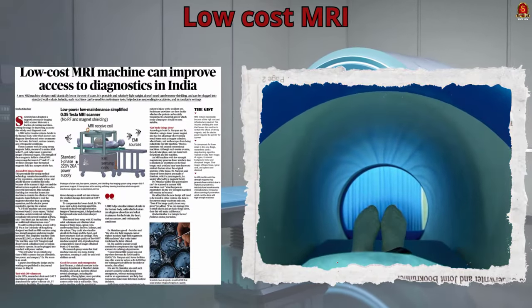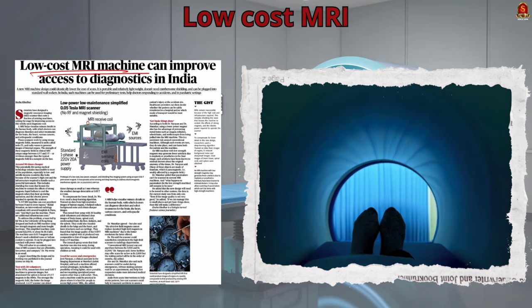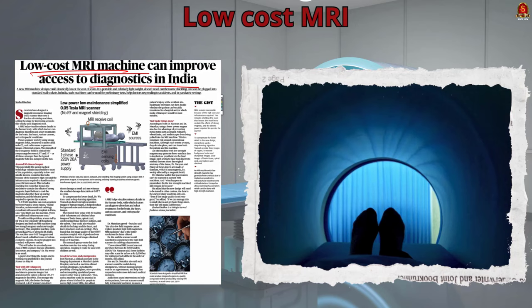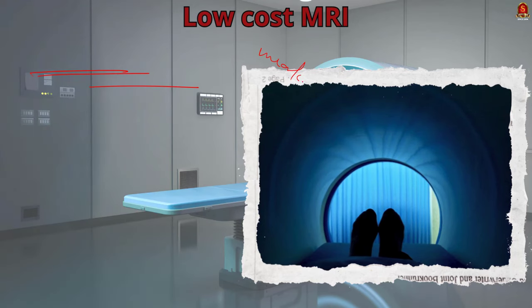Scientists have created a low-cost, portable MRI machine that can help improve medical diagnostics in India. This new machine uses a V-shaped magnet and is much cheaper than traditional MRI machines. It can be plugged into a regular wall socket and does not need expensive infrastructure. With the help of special software, it produces clear images despite low magnetic strength. It has been tested on 30 volunteers and has successfully imaged various body parts. This affordable MRI machine can be used for quick tests, emergencies, and children's care, making medical scans more accessible in India. Thus, MRI is a potential prelims question.